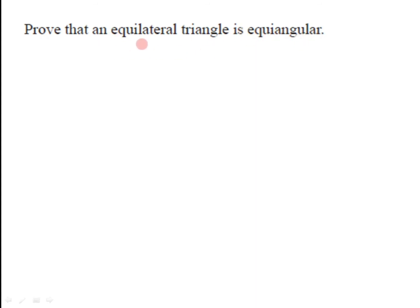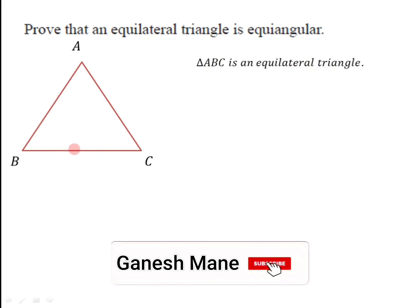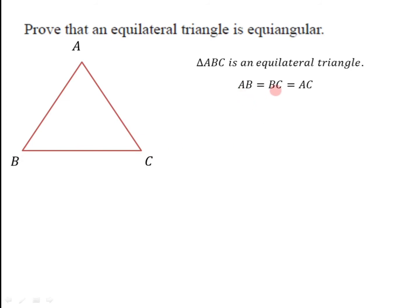Let us have the next question: prove that an equilateral triangle is equiangular. An equilateral triangle has all sides congruent. We have to prove that all angles are also congruent — that is, the triangle is equiangular. Let us take equilateral triangle ABC. Since it is equilateral, AB = BC = AC.